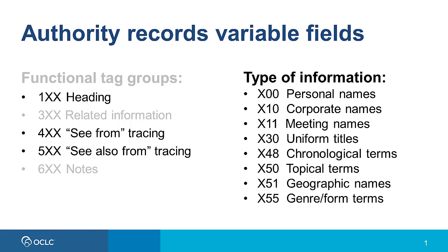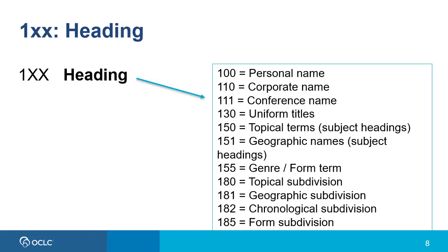For example, if the last two characters are 00, that would be a personal name; 10 a corporate name; 11 meeting names; 30 uniform titles; 48 chronological terms; 50 topical terms, and so on. So the authorized form of a heading for a personal name would be a 100 in an authority record, for a corporate name a 110, and for a subject heading a 150 in an authority record.